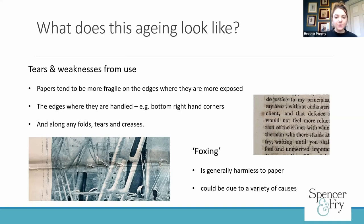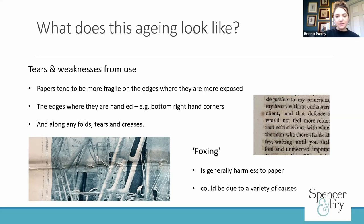You'll probably be familiar with foxing — the brown spots you can see on papers. This could be due to a really wide variety of things. A fairly common cause can be from tiny metal deposits left in papers from the manufacturing process. These, as papers age over time, can become discoloured and give you these little brown spots or marks in the papers.